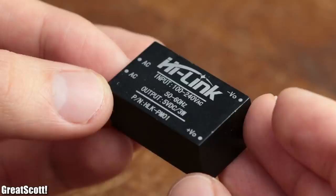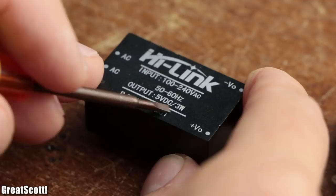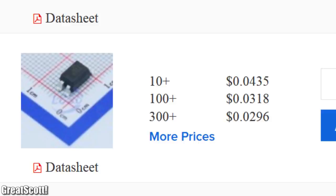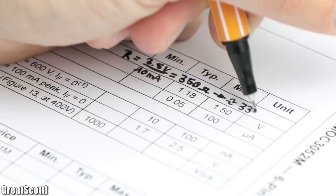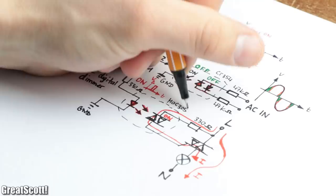So what I did next was searching for suitable SMD components and then calculating the complementary passive components for them according to their datasheet specifications. This resulted in this a bit confusing to look at hand drawn schematic.